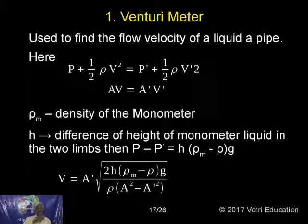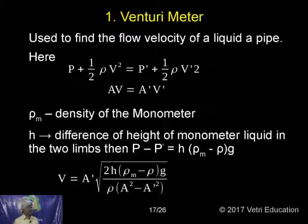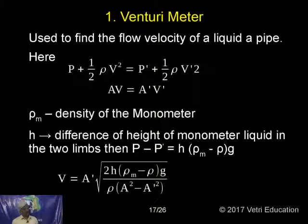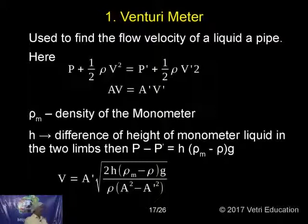We know that if both points are at the same height, Bernoulli's theorem gives: P plus half rho V squared equals P dash plus half rho V dash squared. We know the continuity equation: A1V1 equals A2V2, so AV equals A dash V dash. If rho M is the density of the manometer liquid and h is the difference in height of manometer liquid in the two limbs, the pressure difference P minus P dash equals h times (rho M minus rho) times g. Therefore the formula for velocity V equals A dash times root of 2h(rho M minus rho)g divided by rho times (A squared minus A_L squared). This is the formula for finding velocity.